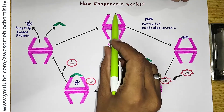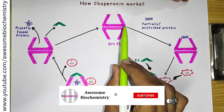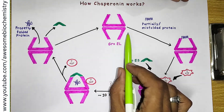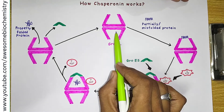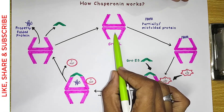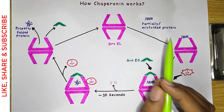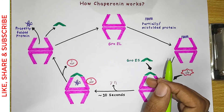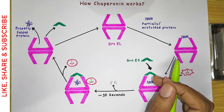You might be wondering about the function of the lower region — the exact same function is also happening in that lower part. This means chaperonins are a double engine system: in one chamber a protein undergoes proper folding, and simultaneously in the other chamber another protein is also being properly folded. So it is double engine in nature. I hope everything regarding the chaperonin is clear. If you still have any confusion or doubt, please write it down in the comment section below. Thank you.